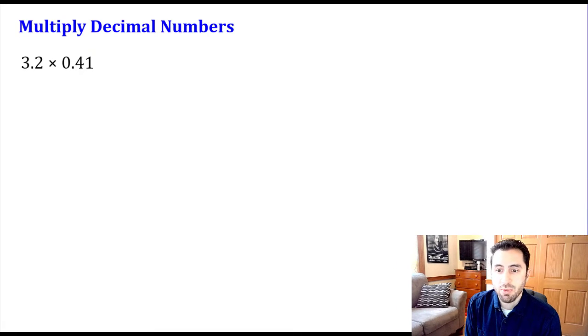So my first example, I have 3.2 times 0.41. So the first thing, if I want to multiply these together, let's rearrange this and write these vertically. So we have 3.2 times 0.41. Now unlike addition or subtraction, I don't need to worry about lining up my decimal points. Because as I go through this multiplication, I'm actually going to treat these as whole numbers first. I'm not going to worry about the decimals until the very end.